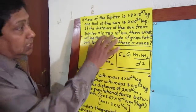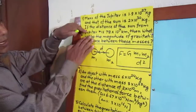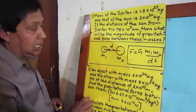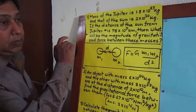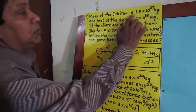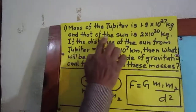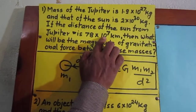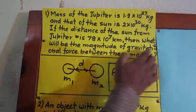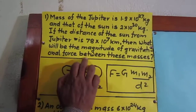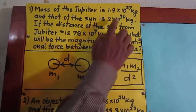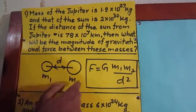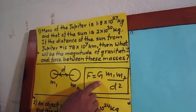Now there are three numericals of this type and I'm going to solve one of them. The first one: the mass of Jupiter is given, and that of the Sun is also given. If the distance between the Sun and Jupiter is given, then what will be the magnitude of gravitational force between these two masses? Two masses and the distance between them are given, and we are going to use this equation.